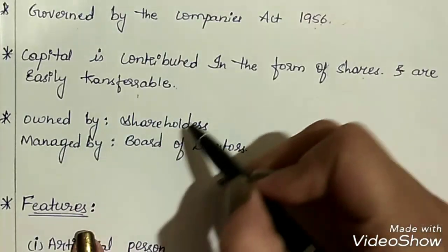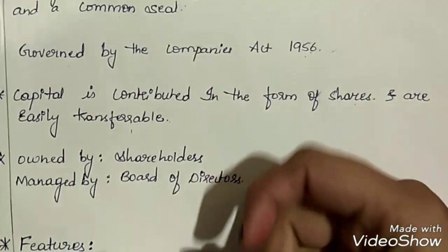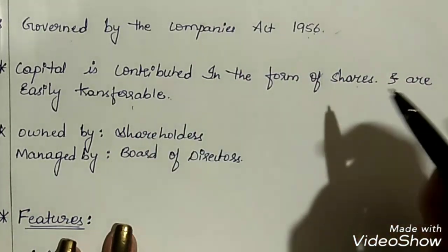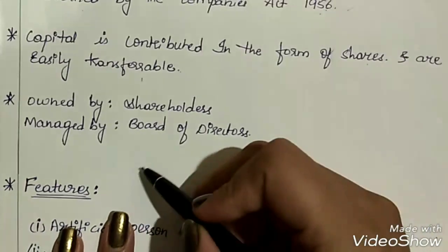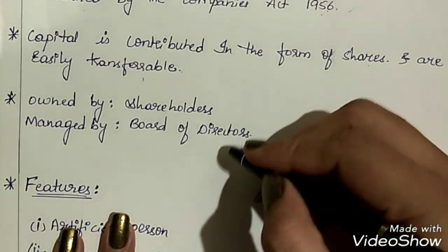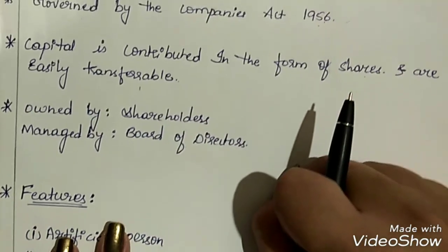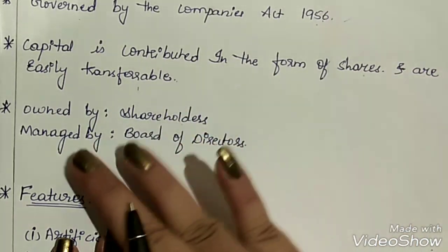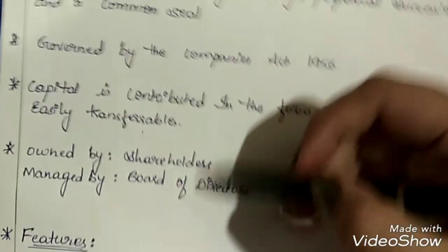Joint stock companies are owned by shareholders but managed by the board of directors. The persons who purchase shares are known as shareholders and they are the owners of the company. The board of directors are appointed by shareholders as representatives to manage all the business activities. This was about the concept of joint stock company.